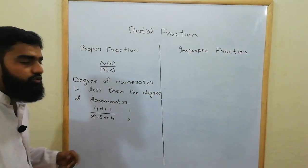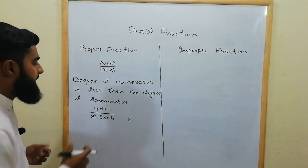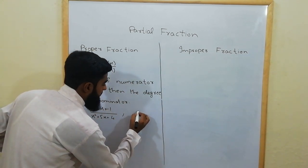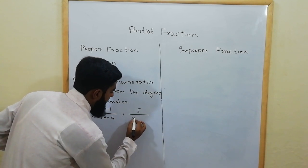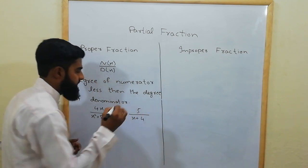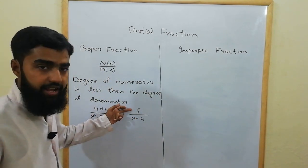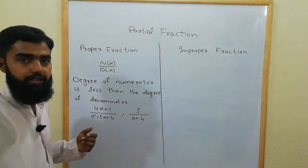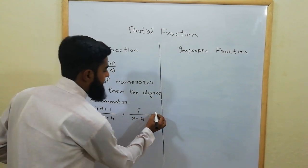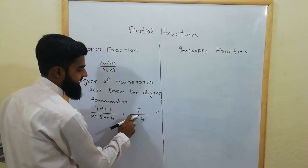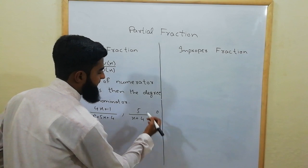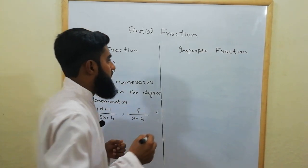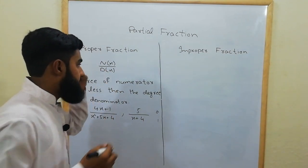Another example is 5 over (x + 4). Here 5 is the numerator — there is no variable in the numerator, so the degree of the numerator is 0, and the degree of the denominator is 1. Since 0 is less than 1, this is also an example of a proper rational fraction.